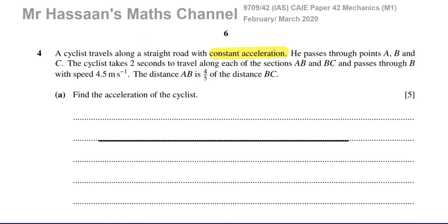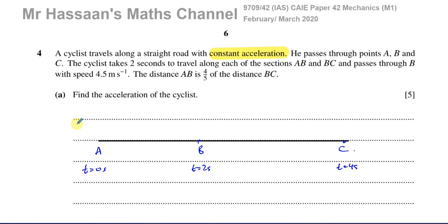I have a straight road. Here's point A. The distance AB is four-fifths, so AB is a shorter distance than BC. At time zero seconds he's going through A, at time two seconds he's going through B, and at time four seconds — considering starting from A — he's going through C. He passes through B with a speed of 4.5 meters per second, and the whole journey is at constant acceleration.